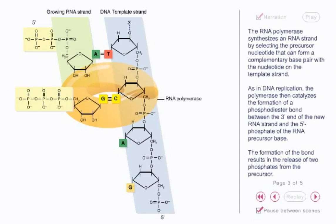As in DNA replication, the polymerase then catalyzes the formation of a phosphodiester bond between the 3' end of the new RNA strand and the 5' phosphate of the RNA precursor base. The formation of the bond results in the release of two phosphates from the precursor.